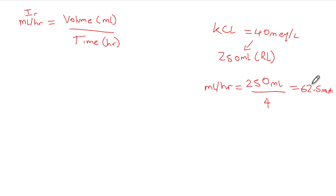Now suppose you don't have an infusion pump. If you leave an order of 62.5 mils per hour for someone newly trained who doesn't understand infusion rates, they may give the potassium too quickly — and your patient can die from arrhythmias. So you need to be able to leave orders that people can follow. If you have an infusion pump, simply calculate volume divided by time in hours and enter the mils per hour.